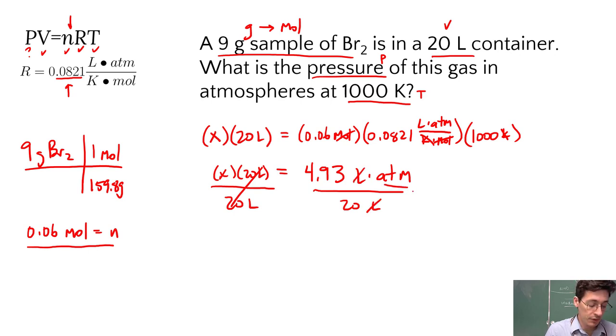And I'm left with the unit I want, atmospheres. So we do 4.93 divided by 20, and I get 0.25 atmospheres.